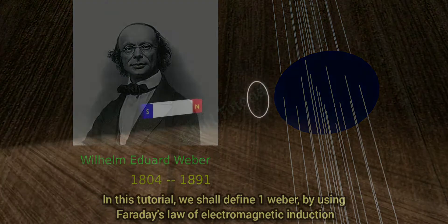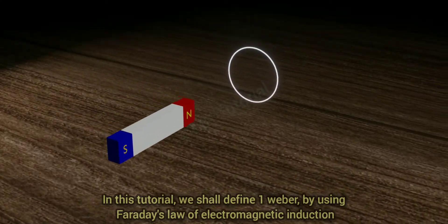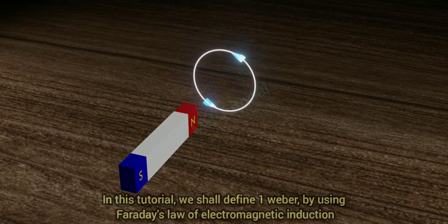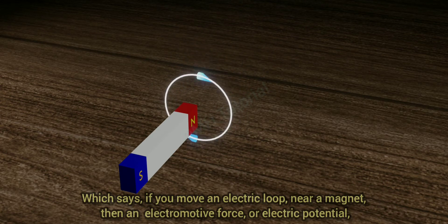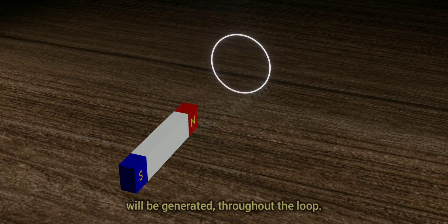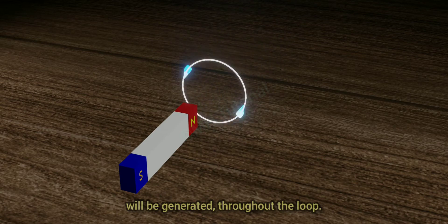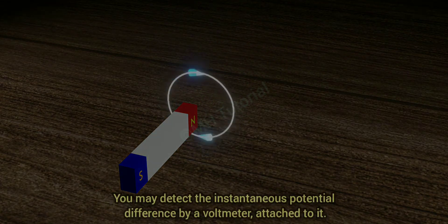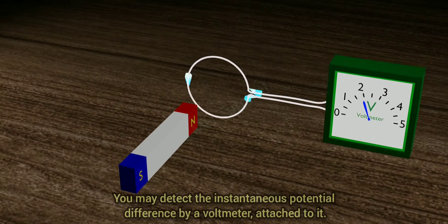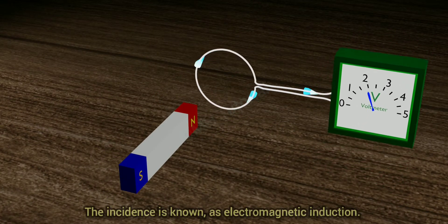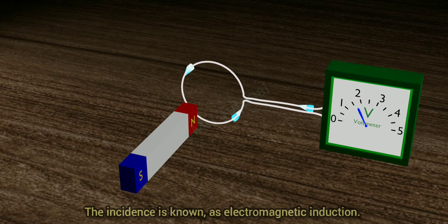In this tutorial, we shall define one Weber by using Faraday's law of electromagnetic induction, which says if you move an electric loop near a magnet, then an electromotive force or electric potential will be generated throughout the loop. You may detect the instantaneous potential difference by a voltmeter attached to it. The incidence is known as electromagnetic induction.